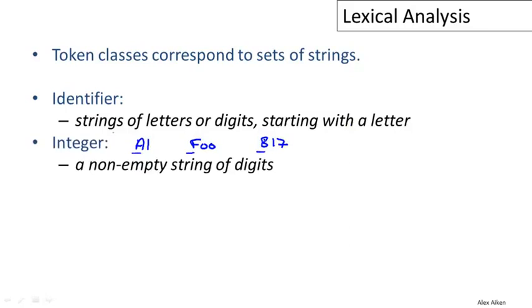An integer—a typical definition of integers is a non-empty string of digits. So something like 0 or 12. 1 followed by 2, I should say, is actually a string, not a number in this case.